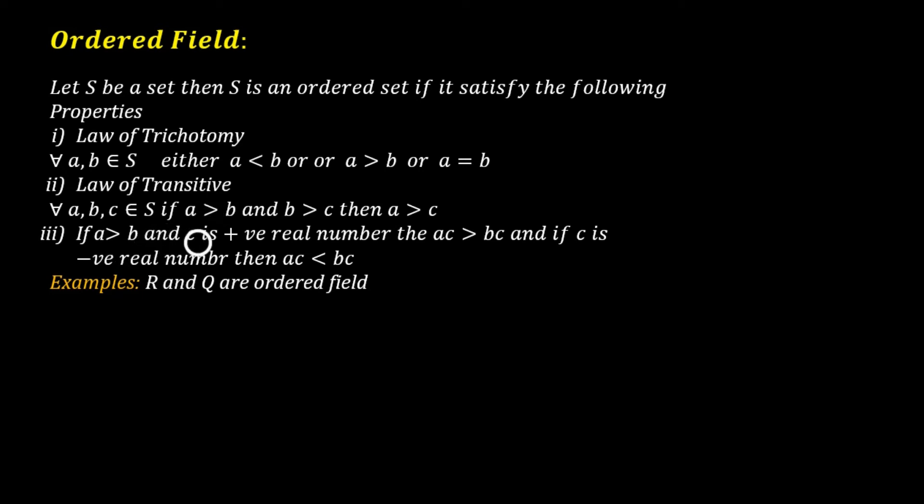And if A is greater than B and C is a positive real number, remember that here we are taking C is the positive real number. When we multiply this C with A is greater than B, then there will be no change of sign of inequality. It will be AC greater than BC. But if C is a negative real number, then the sign will be changed. It will be AC is less than BC.